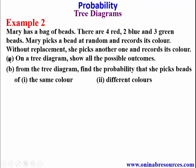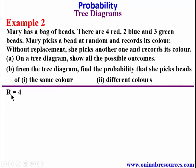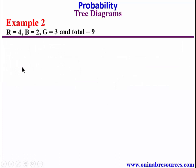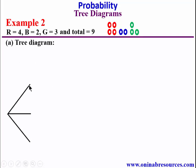So we start with Part A of the problem. We are given 4 red beads, 2 blue beads, and 3 green beads, making a total of 9 beads in the bag. We start with the tree diagram. Since there are 3 colors, the first choice will look at red, blue, and green.